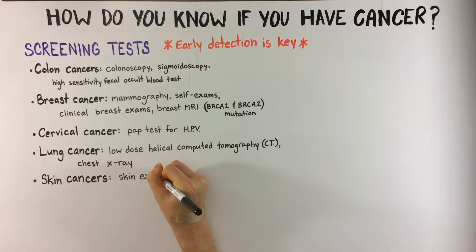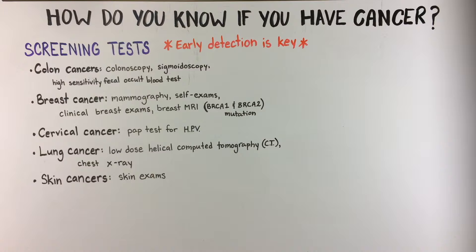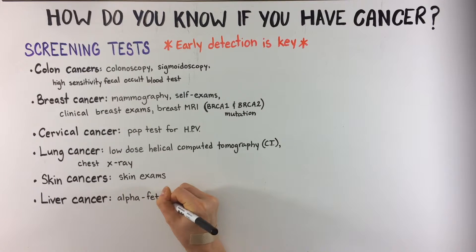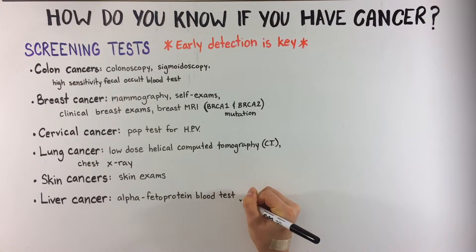Skin exams for growths or moles with bleeding, or moles with irregular borders, can be done by you or your doctor. This checks for skin cancers. Alpha-fetoprotein blood tests can check for liver cancer in individuals who are at high risk.